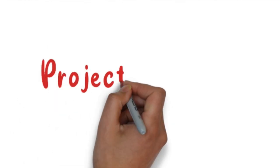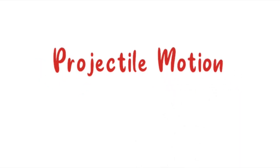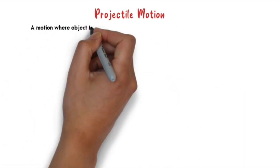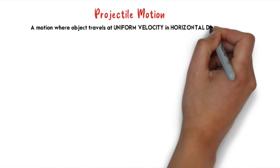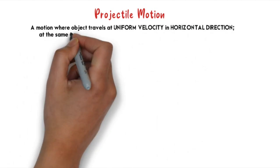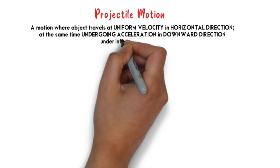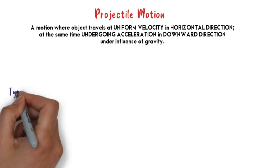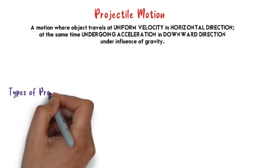Let's first understand what projectile motion means. It is a motion where an object travels at uniform velocity in the horizontal direction while at the same time undergoing acceleration in the downward direction under the influence of gravity.